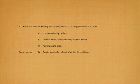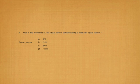Moving on to question number 2: how is Huntington's disease passed on in the population if it's fatal? People aren't affected until after they have children, so the disease is carried until then. People who carry Huntington's disease can still have children, so it's not passed on by carriers in the traditional sense. Option D is the correct answer.